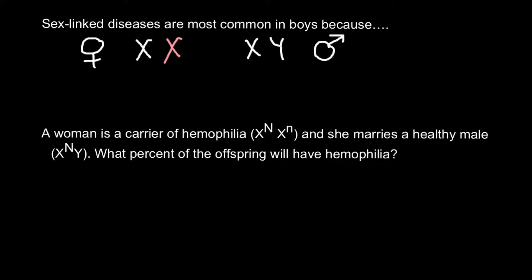Both female and male would produce gametes. Females would produce gametes that we call egg cells, and males would produce gametes that we call sperm. Of course, gametes would be haploid. So that means that in the gametes we can find only either this X chromosome or the other X chromosome, and the male would produce sperm with either the X chromosome or the Y chromosome.